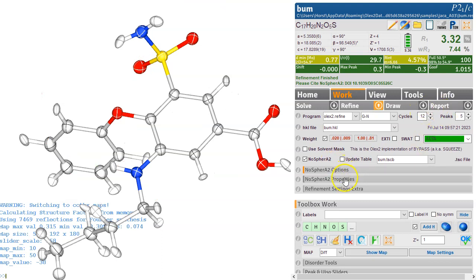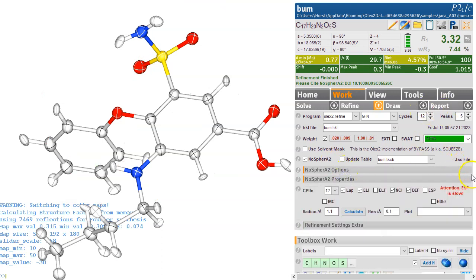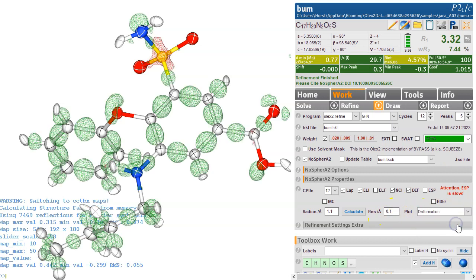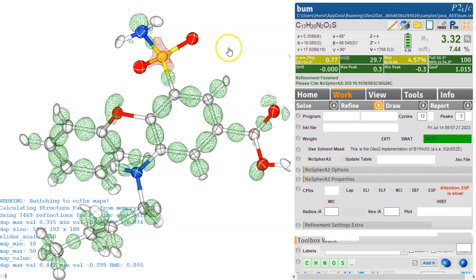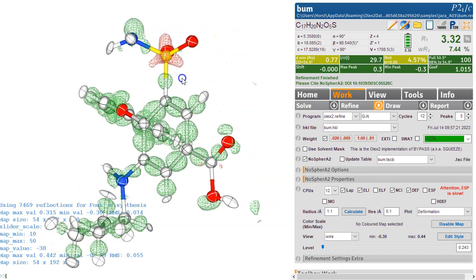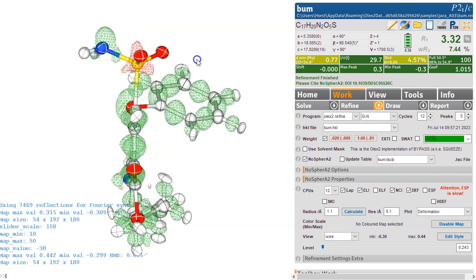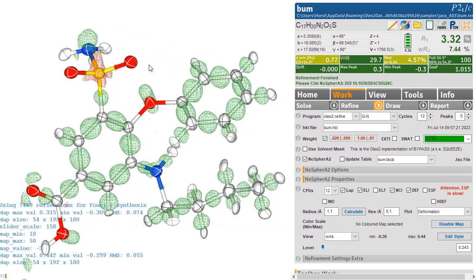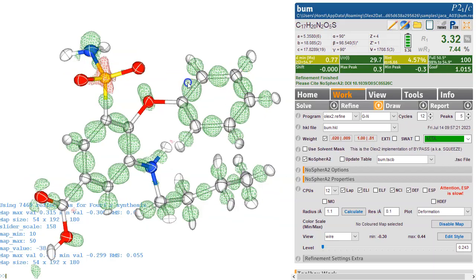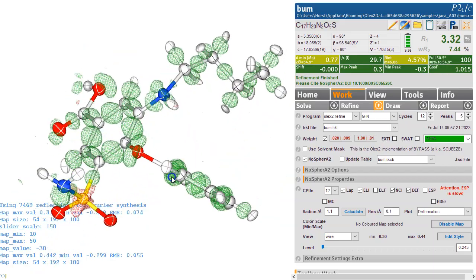And we can also look at things like the deformation density, which is the difference between the independent atom model, like the standard refinement, and the non-spherical form factor refinement. And we can effectively visualize where these orbitals are. So we can see what the independent atom model hasn't taken into account, that these non-spherical form factors now do take into account.